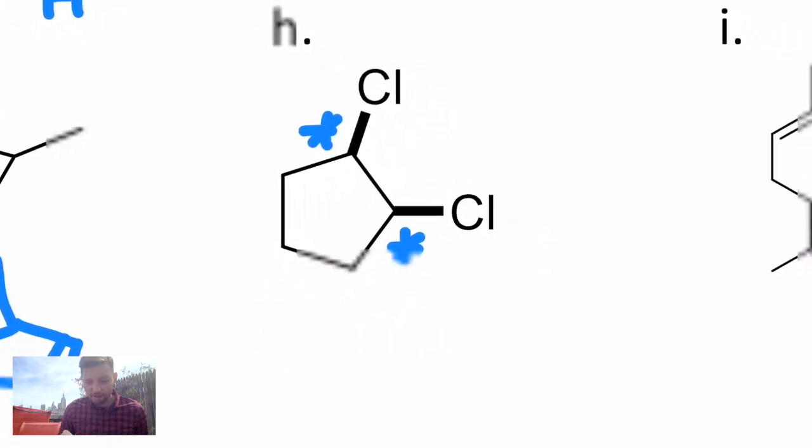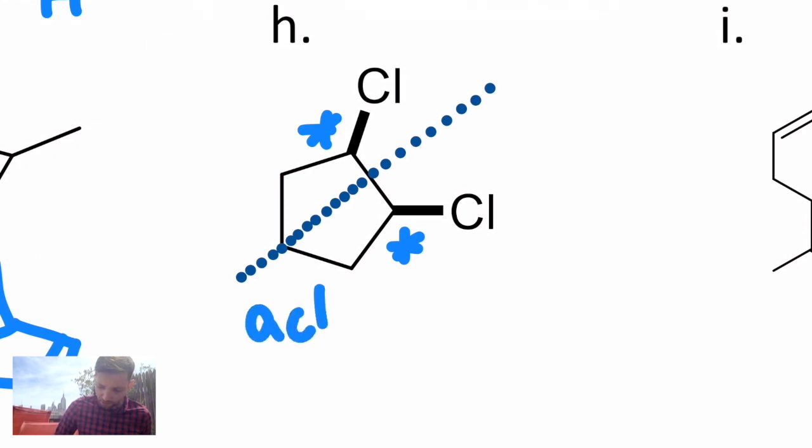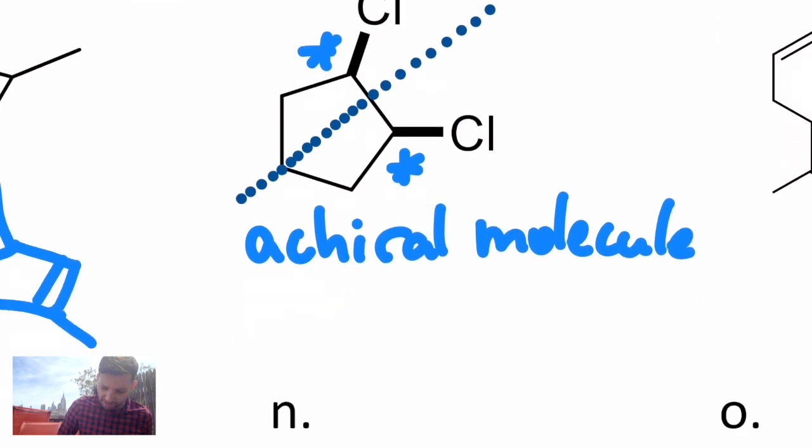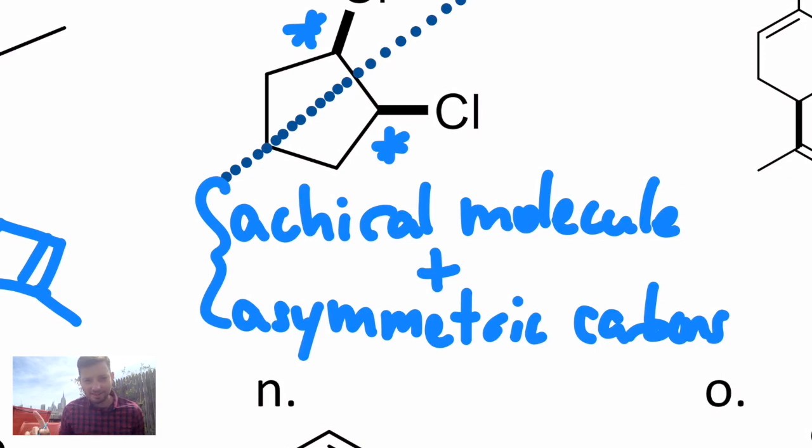This is a very special type of molecule, however, because even though it contains asymmetric carbons, there is a plane of symmetry running right down the middle of that line right there. So overall, this is an achiral molecule. However, it has asymmetric carbons.